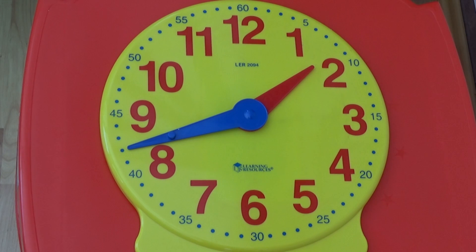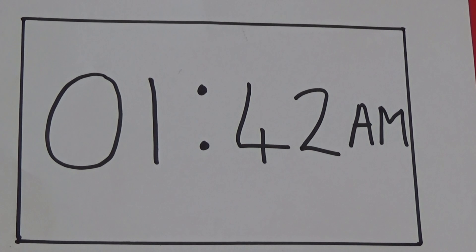If we look at the minutes the hand is pointing at the 42. So the time must be 42 minutes past 1. If we look at our digital clock the hour which is 1 comes first and the minutes come second. As it is AM the time is 1:42 in the morning.